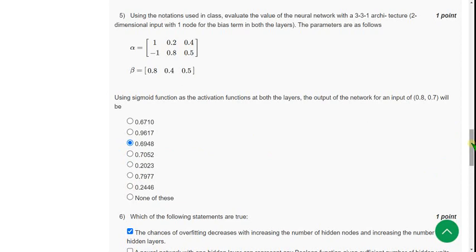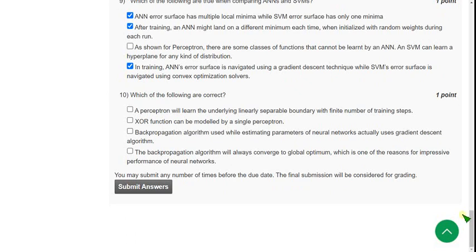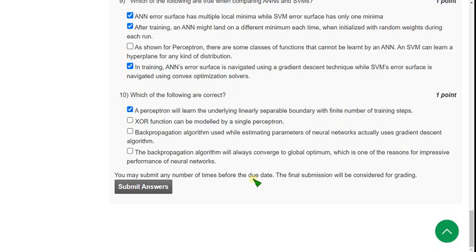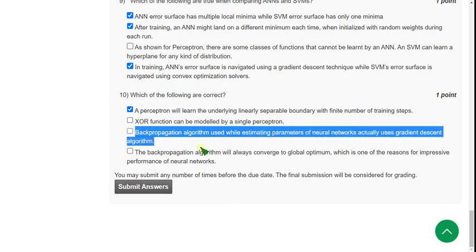Next, we shall move on to the final question, the tenth one. Which of the following are correct? For this, I have got two probable answers. The first one is option 1: A perceptron will learn the underlying linear separable boundary with finite number of training steps. And the other one is third option: Back-propagation algorithm used while estimating parameters of neural networks actually uses gradient descent algorithm. I think these two are the solutions for tenth question.